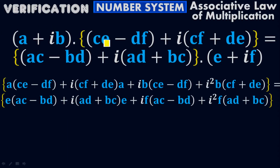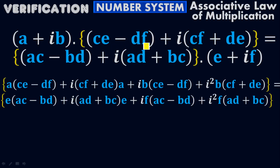There is a product between (A + iB) and (CE − DF + i(CF + DE)). Take the products: A times (CE − DF) gives A(CE − DF). Then i(CF + DE) times A gives iA(CF + DE). Next, iB times (CE − DF) gives iB(CE − DF). And iB times i(CF + DE) gives i²B(CF + DE). This covers the left side.